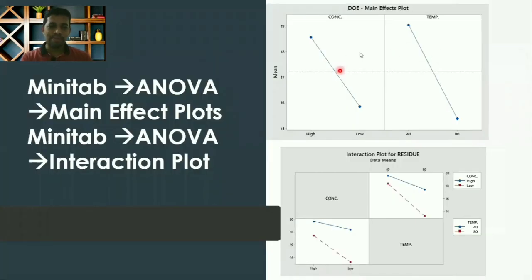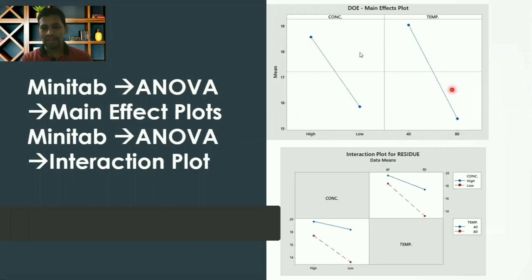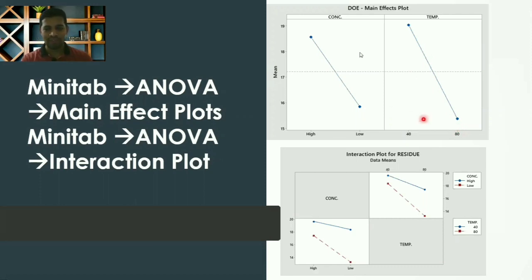This is the typical graph you will get from ANOVA main effect plot. When the concentration is low, you get a low residue value; when concentration is high, you get a high residue value — it's directly proportional. On the other side, if the temperature is set to 40 you get a high residue value, and when temperature is set to 80 you get a low residue value — so it's quite opposite behavior.